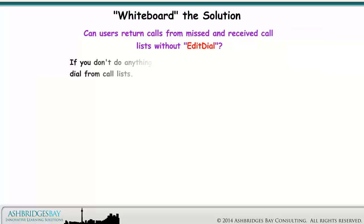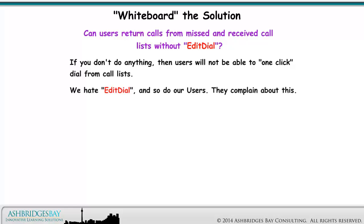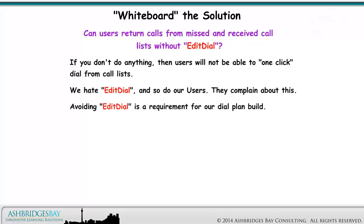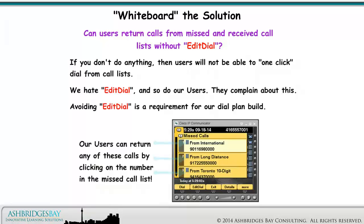If you don't do anything, then users will not be able to one-click dial from call lists. We hate edit dial, and so do our users — they complain about this. Avoiding edit dial is a requirement for our dial plan build. Our users can return any of these calls by clicking on the number in the missed call list.